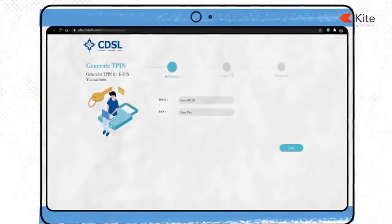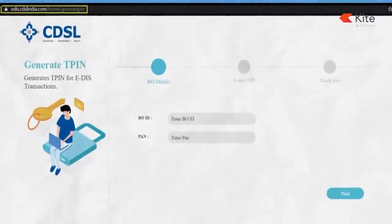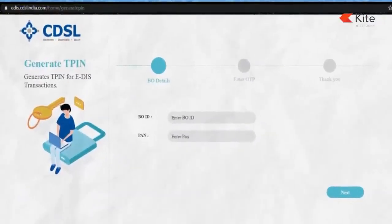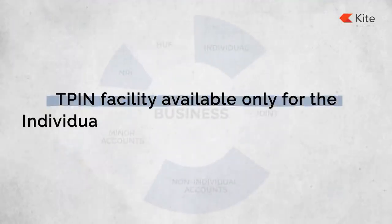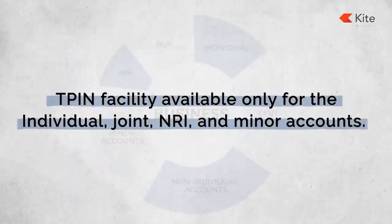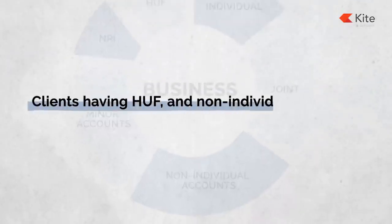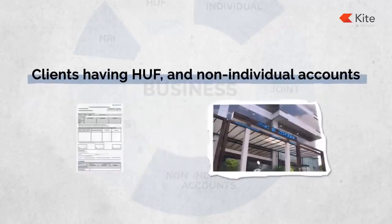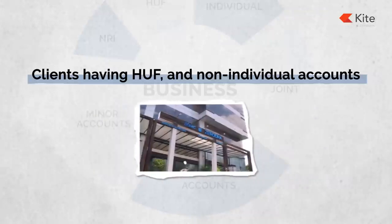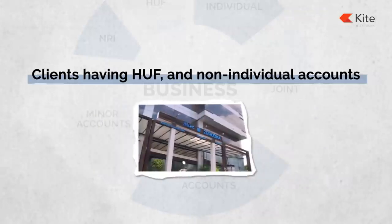If you haven't received it, you can simply log on to the provided link. CDSL has made the T-PIN facility available only for individual, joint, and NRI account holders. Clients having Hindu undivided family and non-individual accounts will still have to send a physical POA to headquarters in Bangalore.